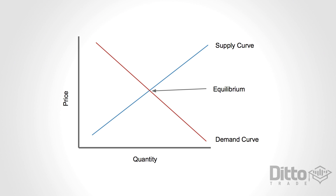If apples were only one pound per bag, we would want to buy as many as we could because it's good value for money. As price increases, demand weakens, because if apples are ten pounds a bag we can easily find a replacement product to eat instead. Note the demand curve and how it's the exact opposite at the starting point. These two competing forces meet in the marketplace to decide the prices that will be paid and the number of units that will change hands.